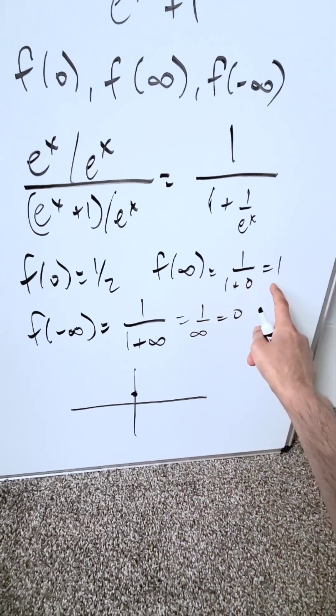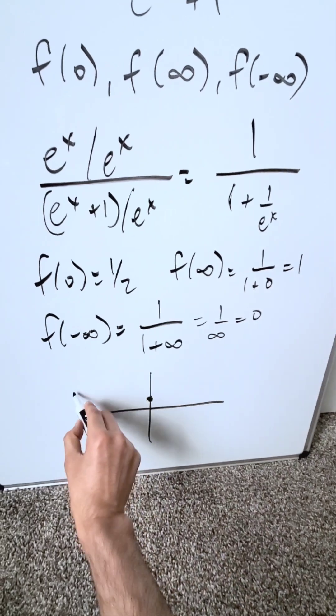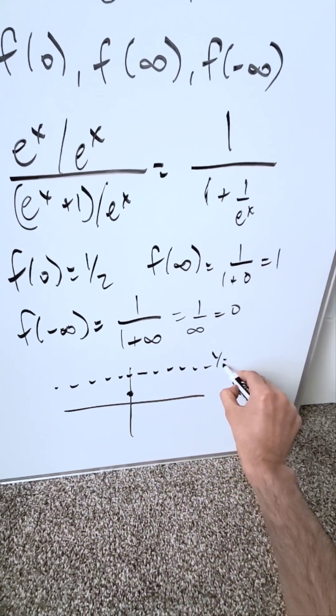When I'm looking at infinity, I'm tending towards 1. It's giving me my horizontal asymptote. I have a horizontal asymptote here at y equals 1.